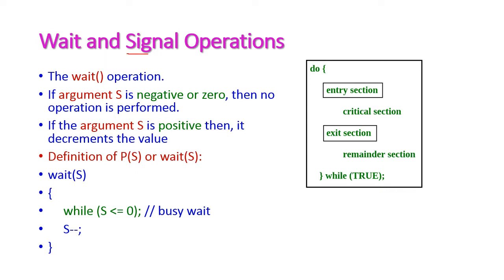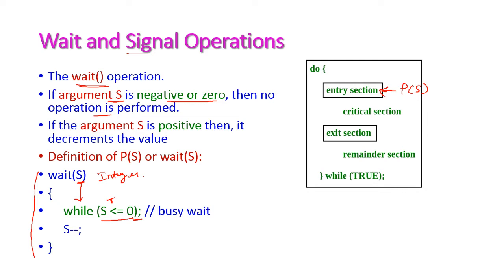The wait operation is in the entry section of the critical region problem, as we have already seen. The wait operation, otherwise called the P operation, accepts one argument of type integer. When entering the wait operation, it first checks whether the S value is less than or equal to zero. If the condition is true, no operation is performed — the while loop is entered by semicolon and it will repeatedly execute without coming out, because this is the while operation. So if S value is 0 or less than 0, the control will be stuck inside the while loop.